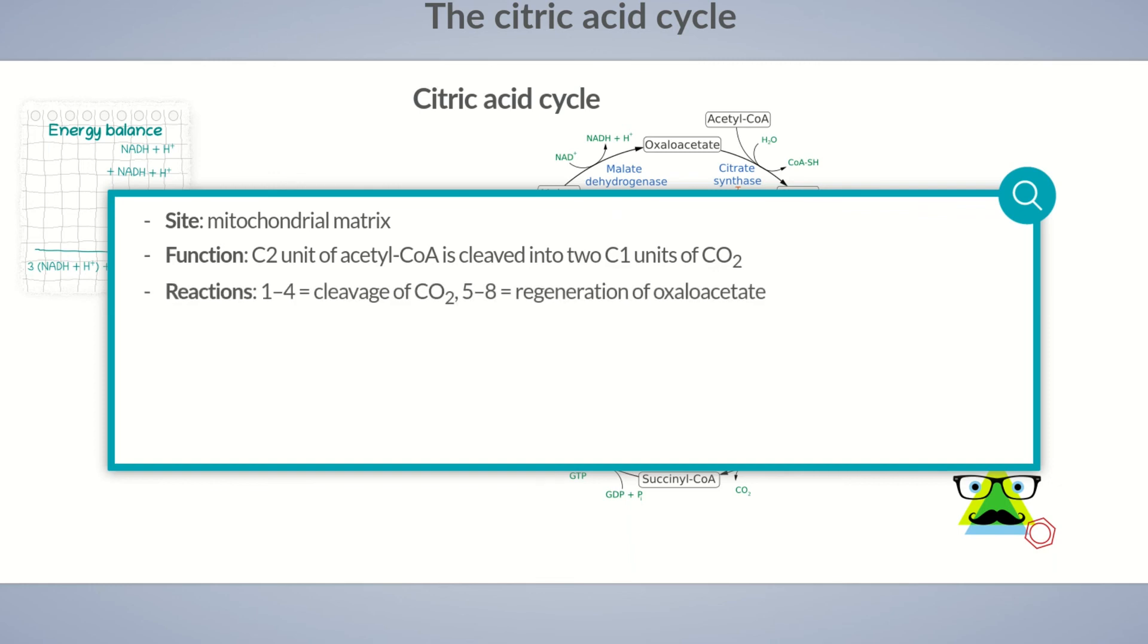The remaining four reaction steps are required to regenerate the carrier molecule oxaloacetate from succinate by a reaction path similar to beta-oxidation. The energy balance of the citric acid cycle for each molecule of acetyl-CoA is 3 NADH and H+, 1 GTP, and 1 FADH2.